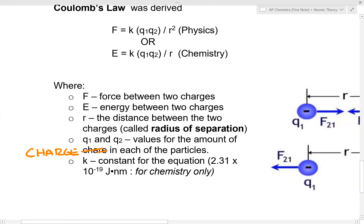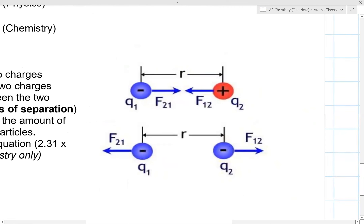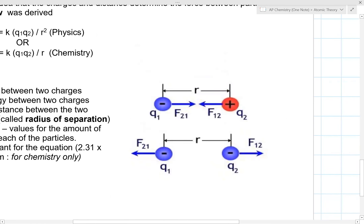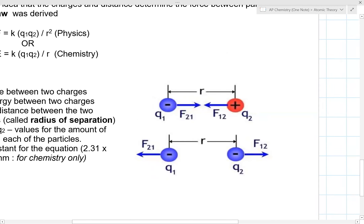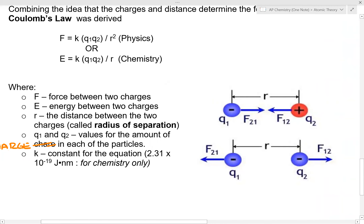We can measure the attractive force between two oppositely charged particles, or the repulsive force between two similarly charged particles. Regardless of whether measuring attraction or repulsion, the same formula is used. That's Coulomb's law — measuring the amount of force or energy of attraction or repulsion.